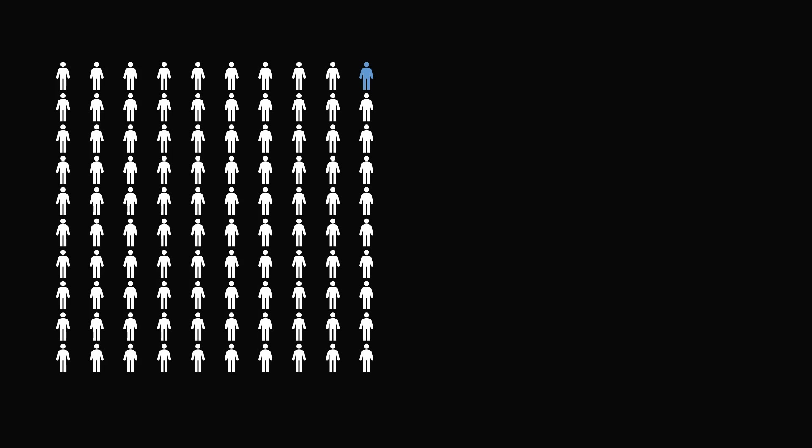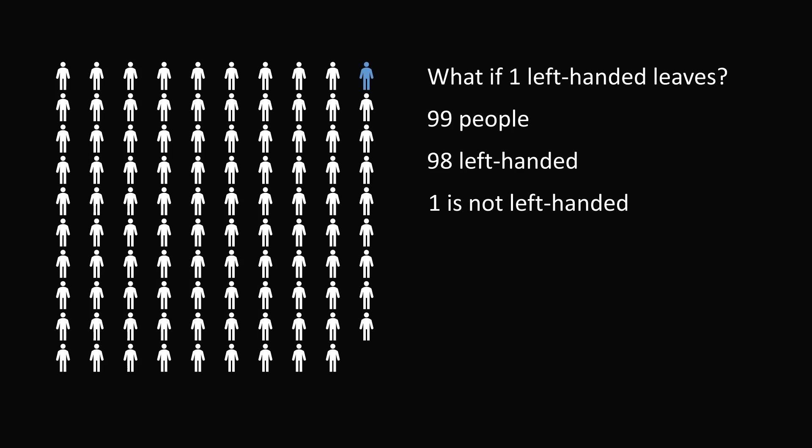Now most people think the answer is 1 person. But let's see what happens if 1 left-handed person leaves the room. Let's say this person in the lower right leaves the room. How many people are in the room now? This will be 100 minus 1 which equals 99 people. How many of those people are left-handed? It will be 1 fewer people so that will be 98 left-handed people. We still have 1 person who is not left-handed.